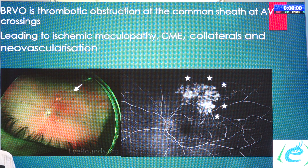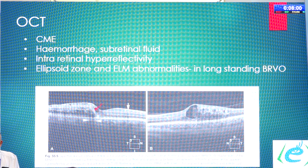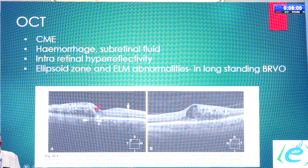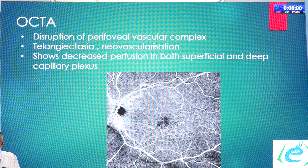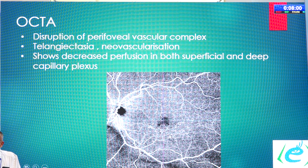BRVO is a thrombotic obstruction at the common sheath of arteriovenous crossings, leading to ischemic maculopathy, CME, collaterals, and neovascularization. These are wide-field photographs of BRVO. On OCT, we see CME, hemorrhage, subretinal fluid, intraretinal hyperreflectivity, and ellipsoid zone and ELM abnormalities. In long-standing BRVOs, we see cyst-like lesions and deposits; hemorrhage casting shadow needs to be interpreted. These are important biomarkers identifying the disease process and its impact on final outcome.